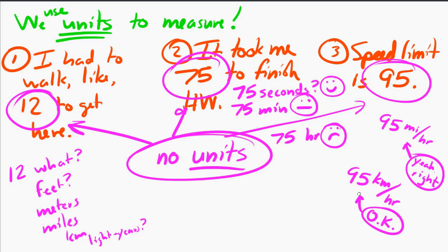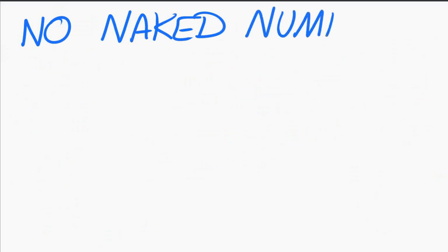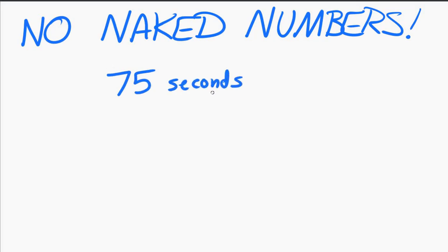So units are key when you make a measurement. And one way that I often say this is, we don't want naked numbers in physics. The numbers have to have units. Think of the units as the clothes. The numbers shouldn't be seen in public without their units.